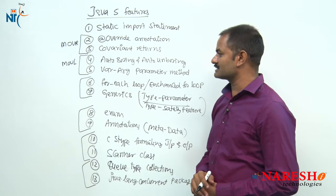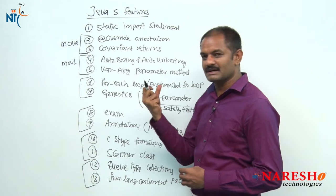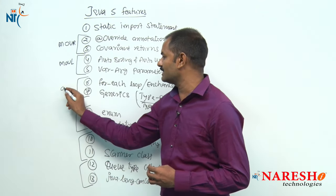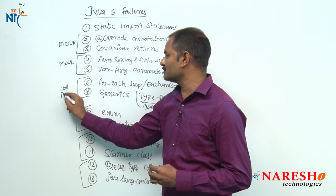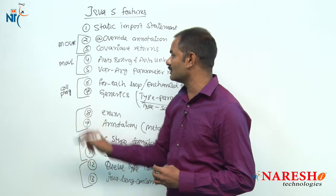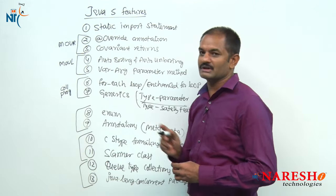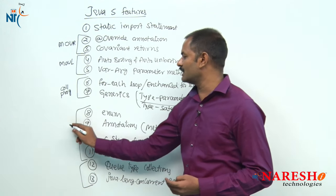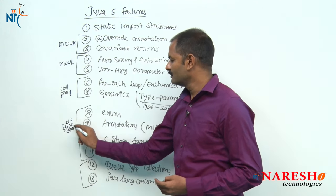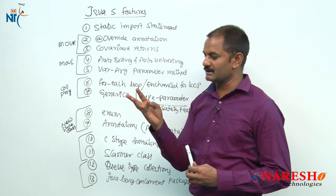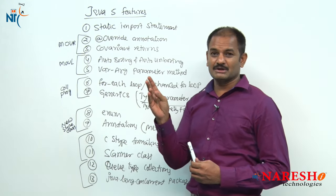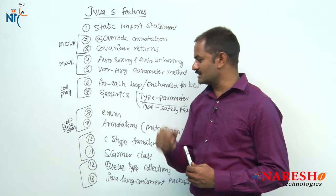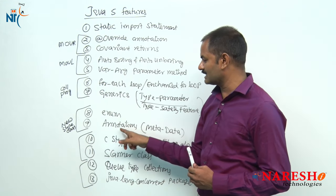For-each loop and generics are given to improve easy reading of collections and easy storing of objects in collections — so these are for collection programming enhancements. Enum and annotations are a new style of classes — in addition to interface, abstract class, concrete class, and final class, two new types of classes are introduced: enum and annotation.